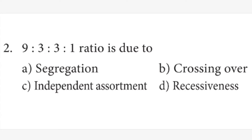Second question: the 9:3:3:1 ratio is due to — Answer is C option, independent assortment.